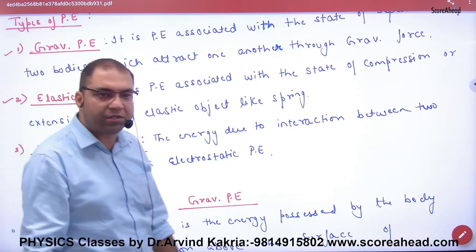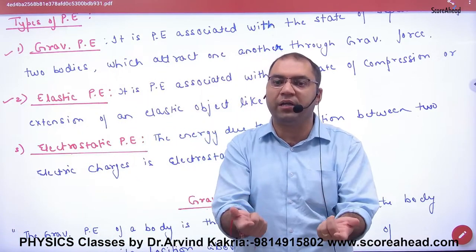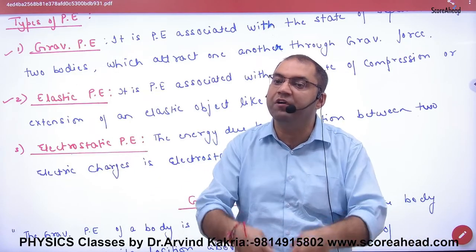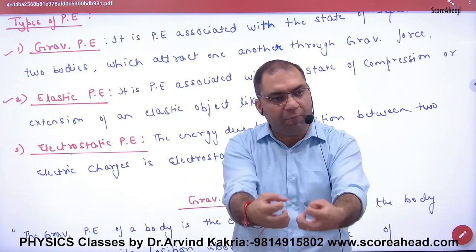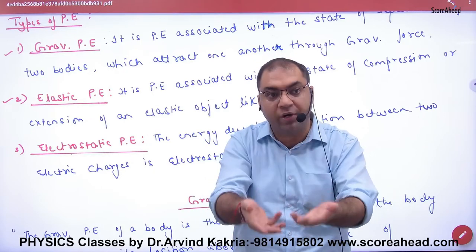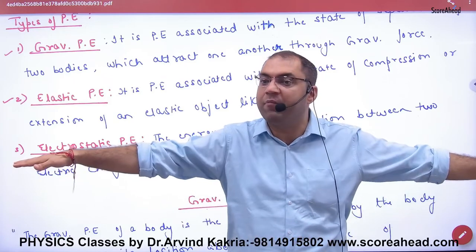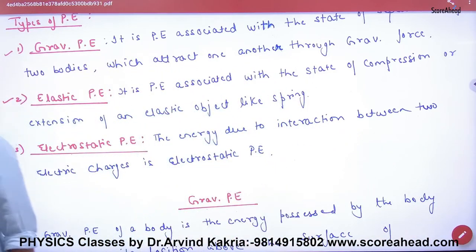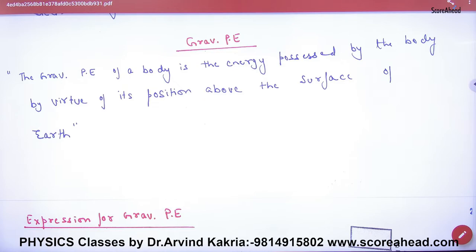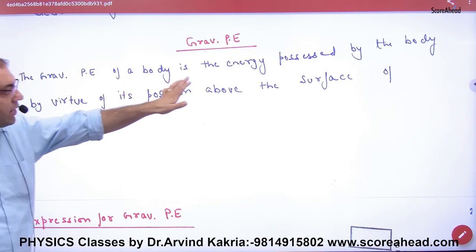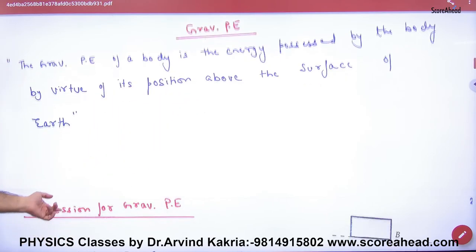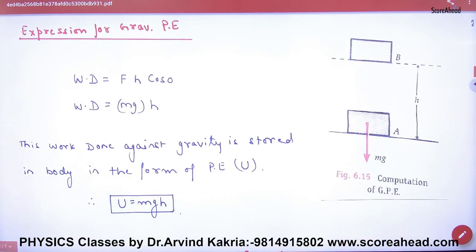Third energy is electrostatic potential energy. Take two positive charges - they repel each other because positive and positive repel. But to bring them together, work is done. That work done is stored in the form of potential energy, and when released the charges start moving, converting to kinetic form. So gravitational potential energy is the energy possessed by a body by virtue of its position above the surface of the earth.